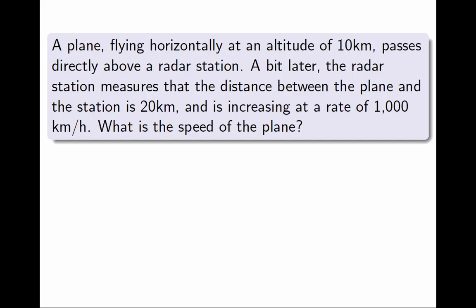Here is the problem. A plane flying horizontally at an altitude of 10 km passes directly above a radar station. A bit later, the radar station measures that the distance between the plane and the station is 20 km and is increasing at a rate of 1,000 km per hour. What is the speed of the plane?